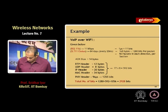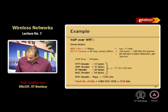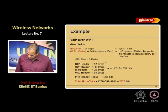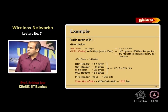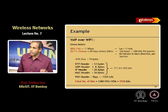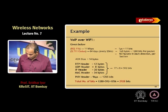I have also found out the numbers for the various headers. RTP header is 12 bytes, UDP header is 8 bytes, IP header is 20 bytes, MAC header is 34 bytes. The PHY header is typically not calculated in bytes but in microseconds. The PHY header for 11 Mbps is 96 microseconds. The ACK size is 14 bytes.